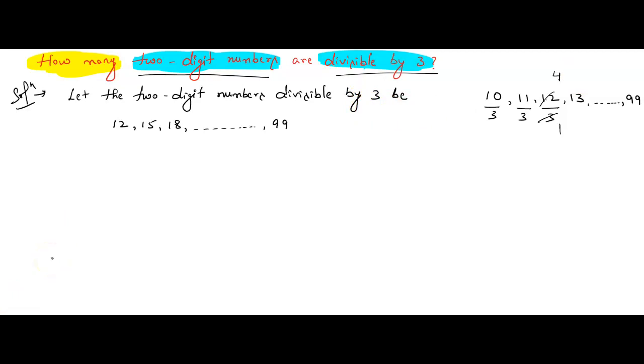Now, after this, how many two-digit numbers are there from 12 to 99? From 12 to 99, which are divisible by 3, how many numbers are there? We need to check. So we need to find the value of n. n will tell us how many number of digits are there. So n equals question mark. What is the first term? First term is 12. Then what is the common difference? That is a2 minus a1. What is second term? 15 minus first term 12. 15 minus 12 is 3. So common difference is 3. And what is the nth term? nth term is 99.